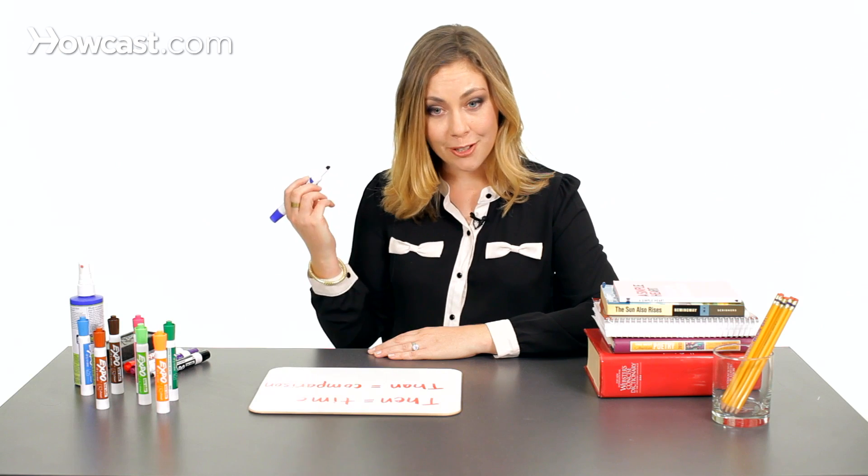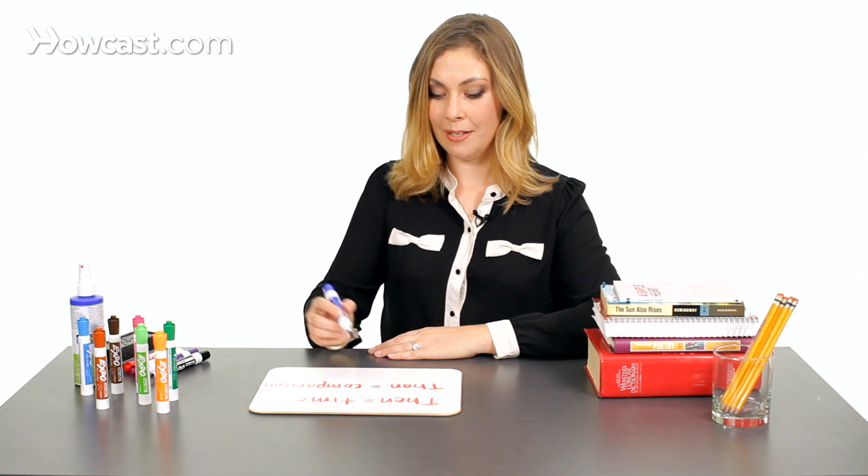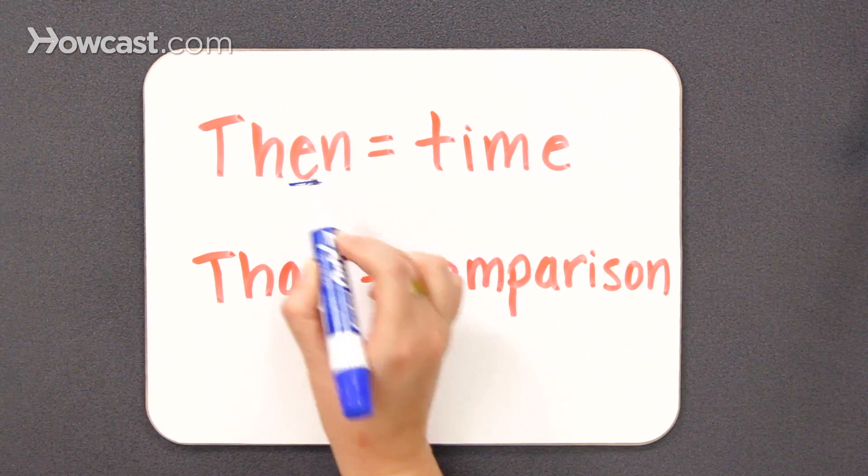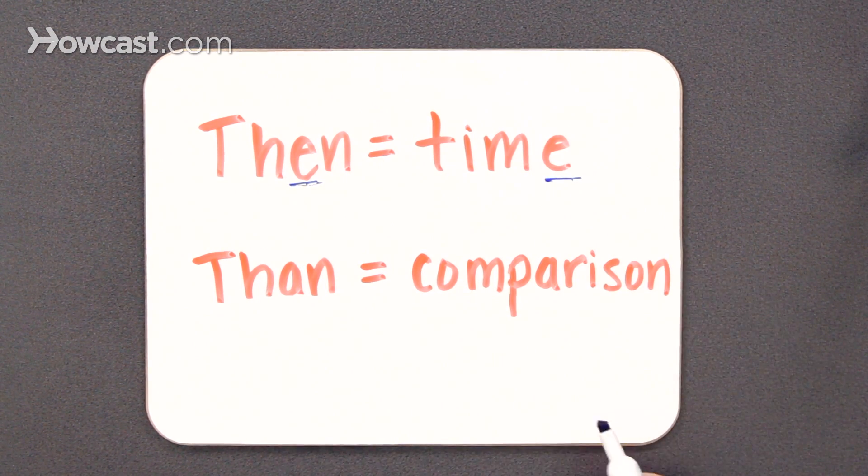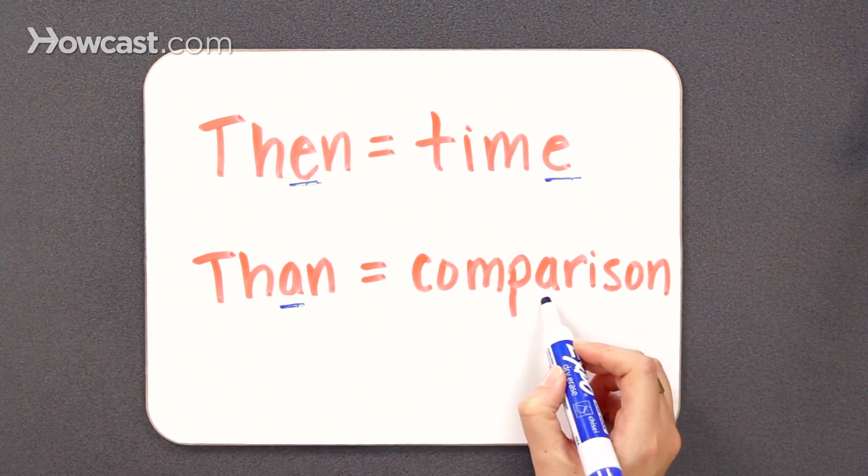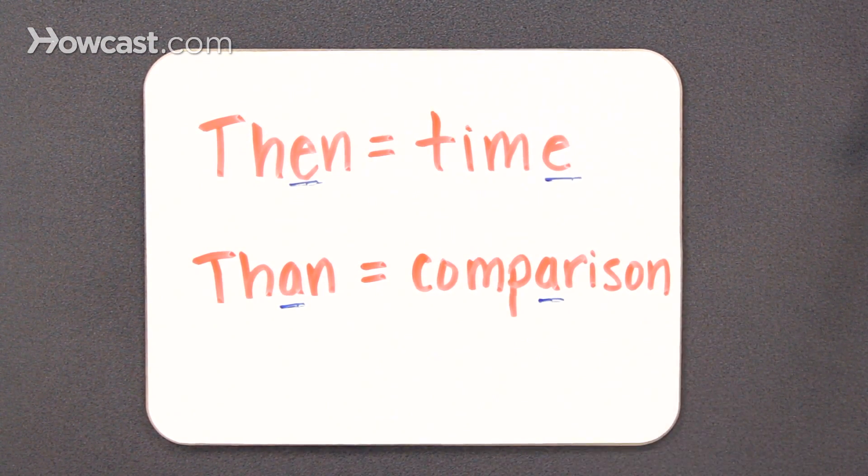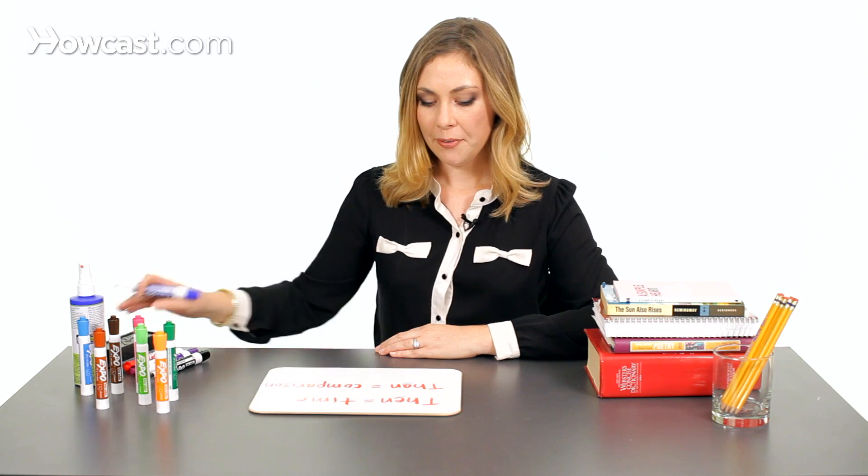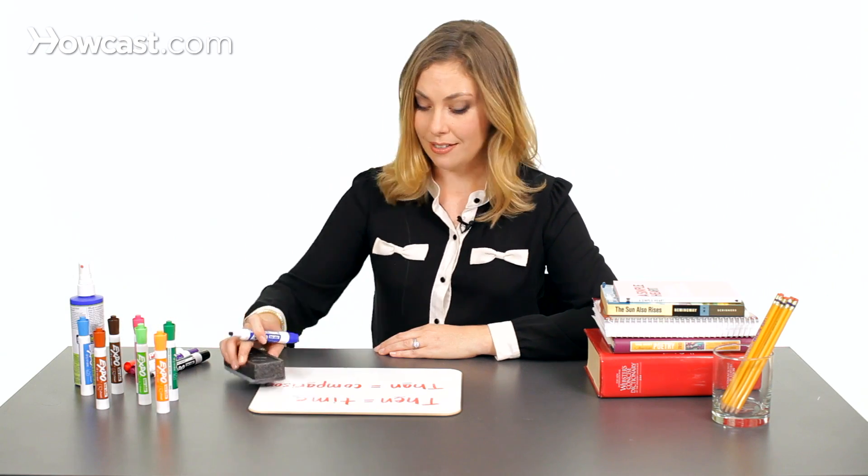I like memory tricks and I remember this by noting that there's an E in then and time, and there's an A in than and comparison. It can help me recall it a little more quickly. Let's take a look at how it functions in a sentence.